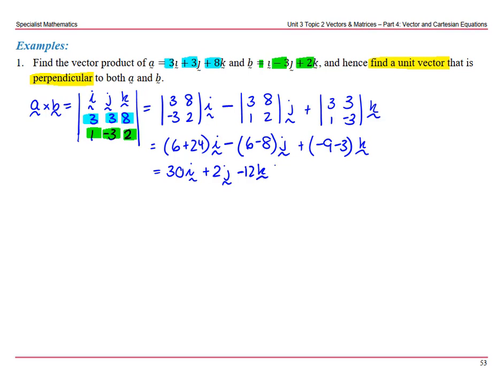Minus 12k. Now we want the unit vector that is perpendicular to those a and b.